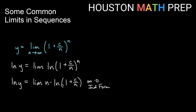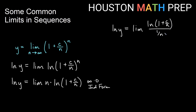We rewrite this as a fraction by moving n down: ln of y equals the limit of ln(1 + c/n) over 1/n. As the limit is evaluated, the top approaches ln of 1 which is 0, and the bottom approaches 0 as well. So this is the 0 over 0 indeterminate form, which we can now apply L'Hôpital's rule to.